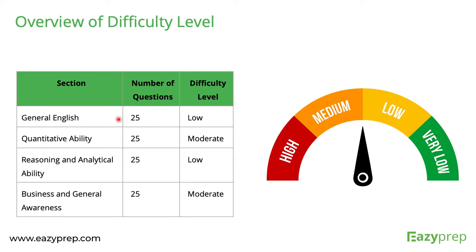If we talk section-wise, all four sections generally carry equal weightage, though this may vary — it was not followed in 2020. General English is on the relatively easier side. Quantitative Ability is moderate to difficult, with some parts being relatively harder. Reasoning and Analytical Ability is relatively easier but becomes tricky. Business and General Awareness, although question-level wise it's relatively easy, becomes difficult because students don't prepare for it and the section is very vast, making it moderate to difficult.